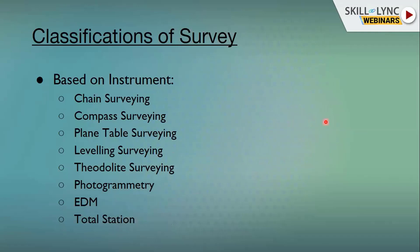The next classification is based on the instrument you are using. For linear measurements, you require chain surveying. For angular measurements, you require compass surveying. Different kinds of surveying exist and all these things will be explained in the upcoming slides.